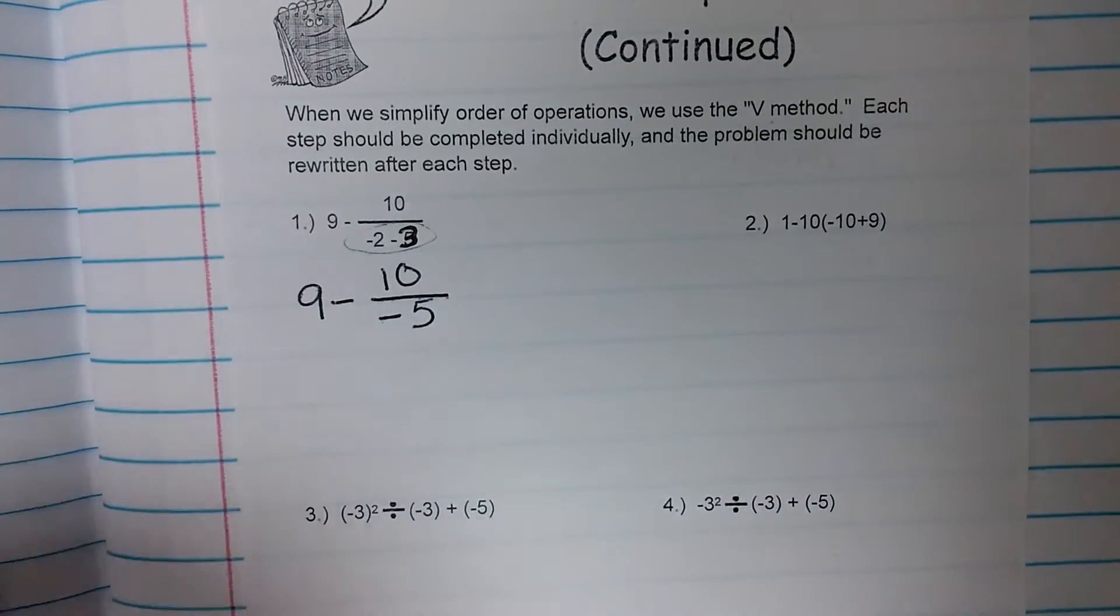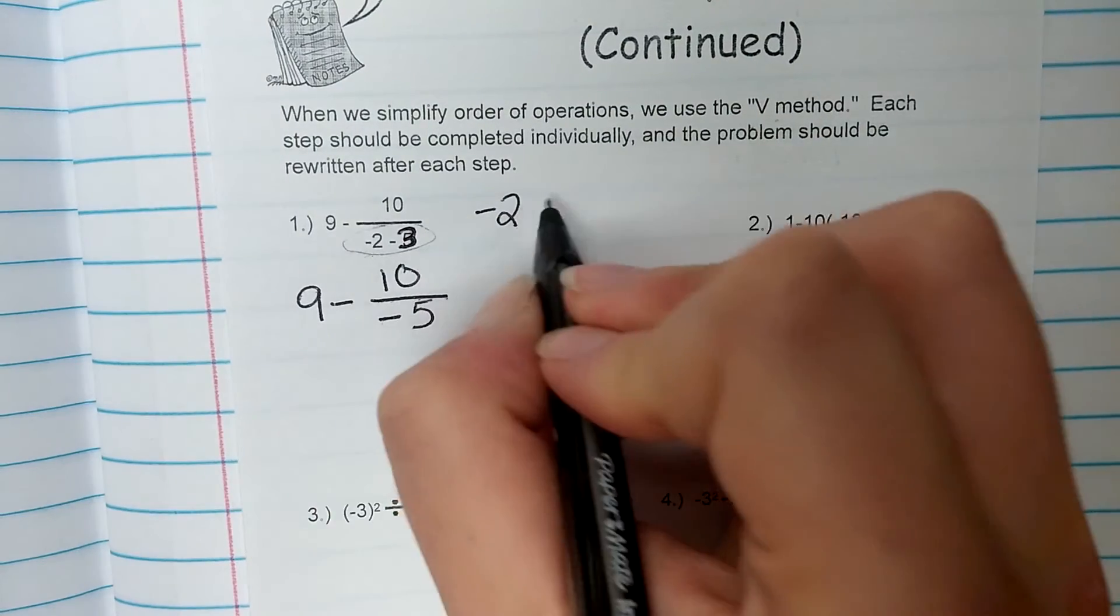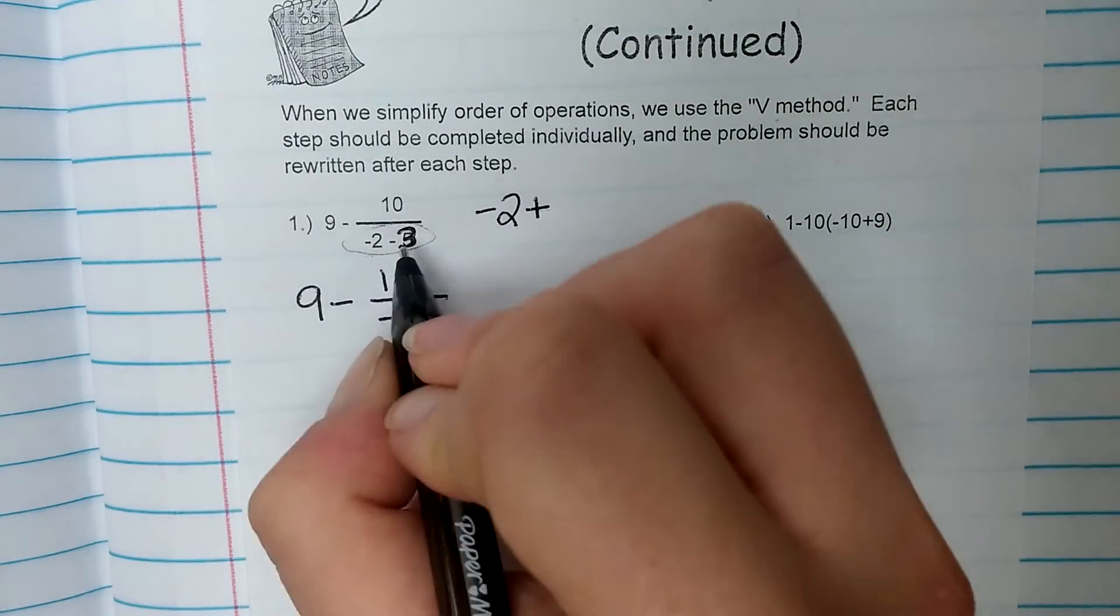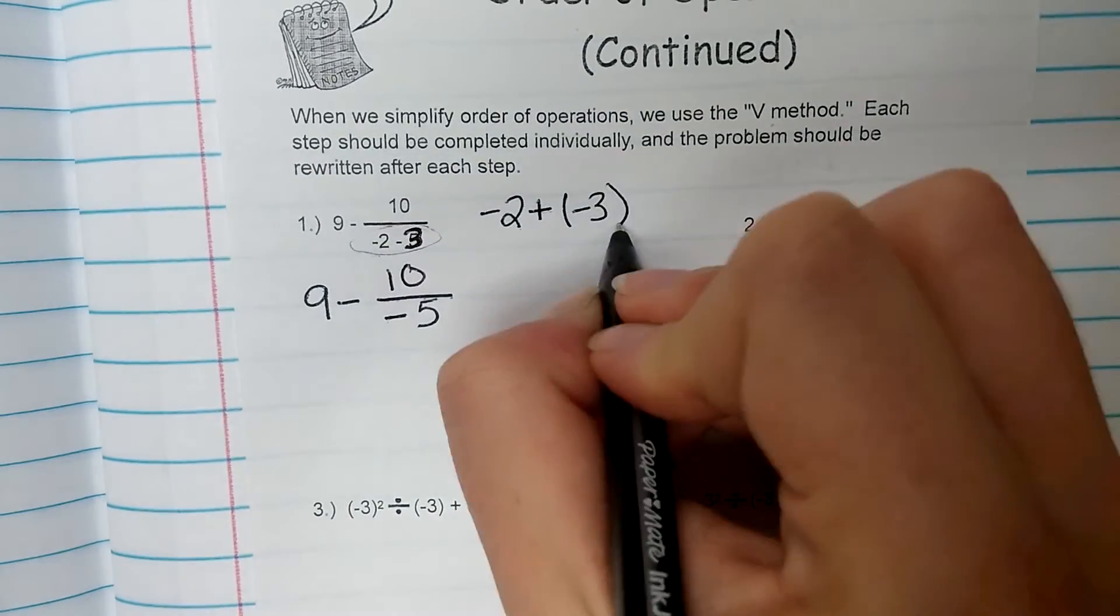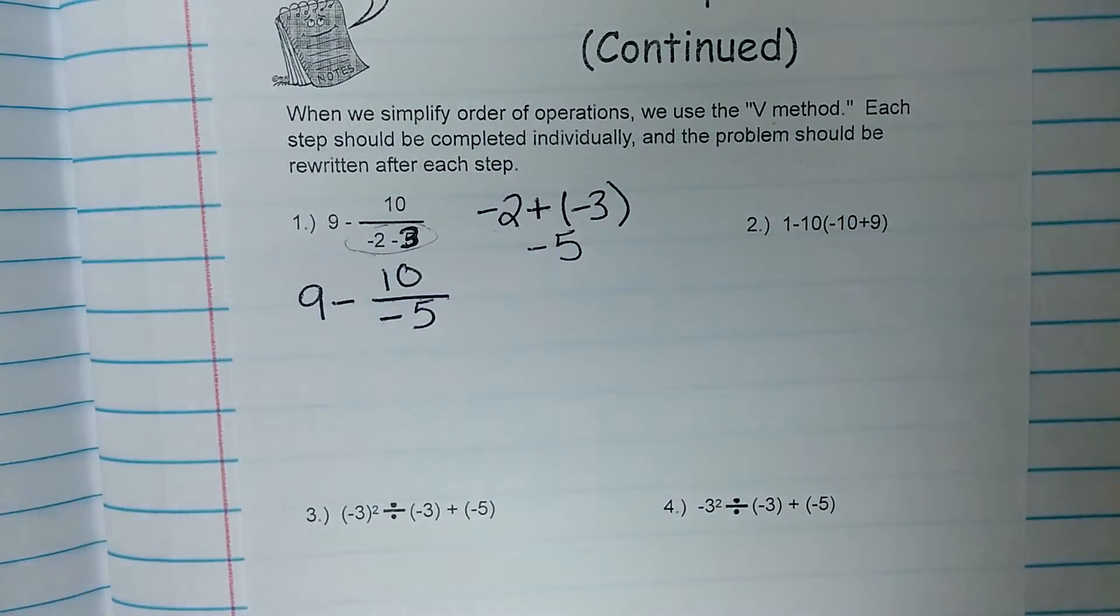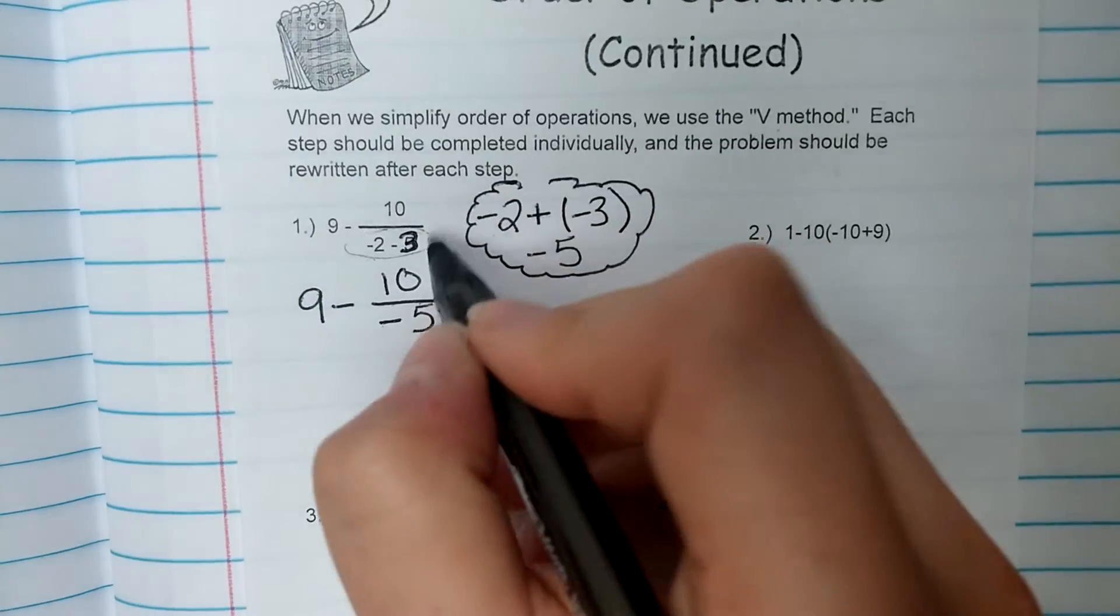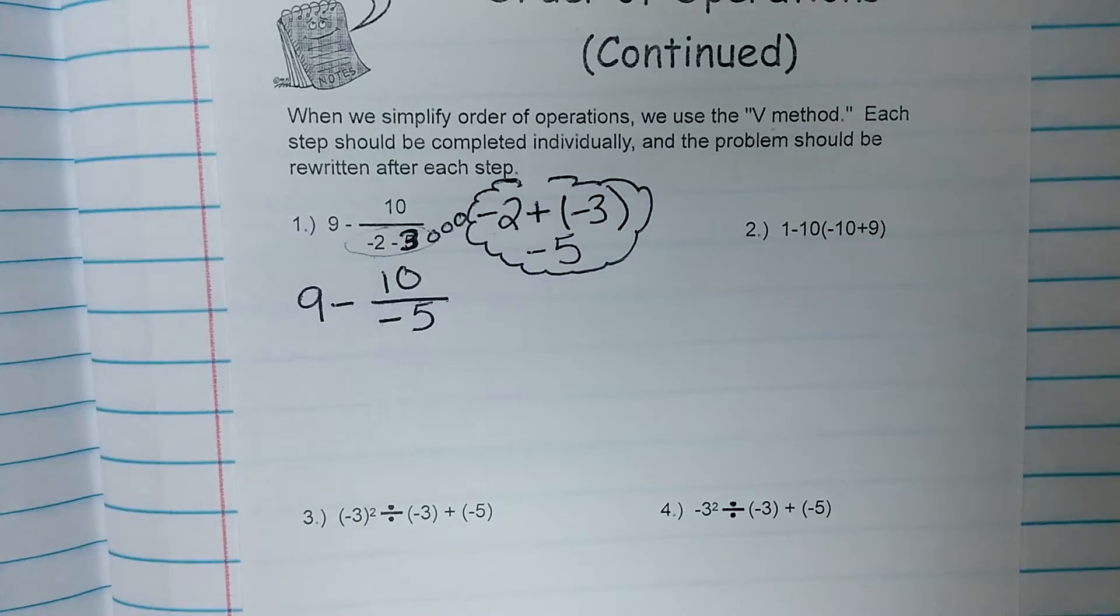And if you're struggling to remember the integer rules, you can kind of work it off to the side. Remember, we keep the first integer, we change the minus to a plus, and we take the opposite of the second integer. And then we can add negative 2 plus negative 3 gives us negative 5. It's kind of like a little side bubble, thought bubble, to help us work that denominator.